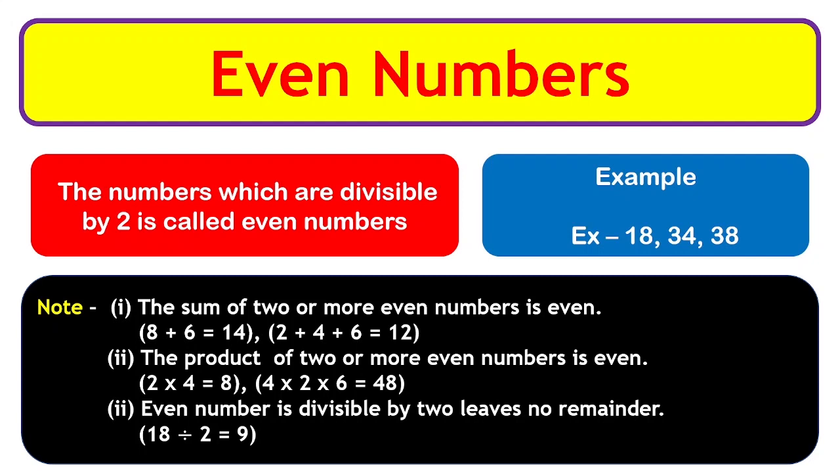For example, 2 plus 4 plus 6 equals 12, and 12 is even. The product of two or more even numbers is always even. For example, 2 multiplied by 4 equals 8, which is even. Also, 4 multiplied by 2 multiplied by 6 equals 48, which is also even. An even number is divisible by 2 and leaves no remainder.